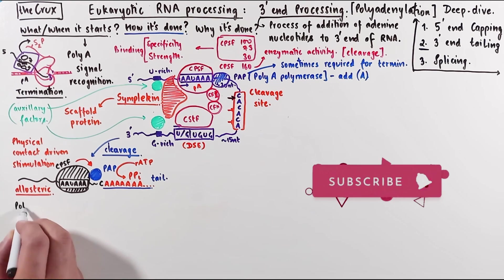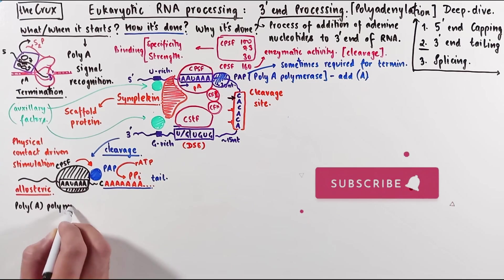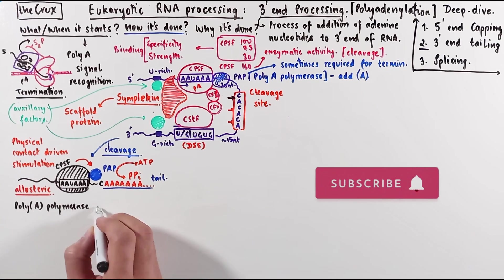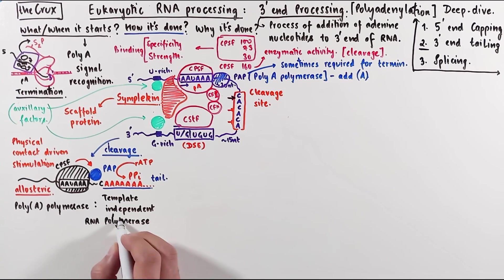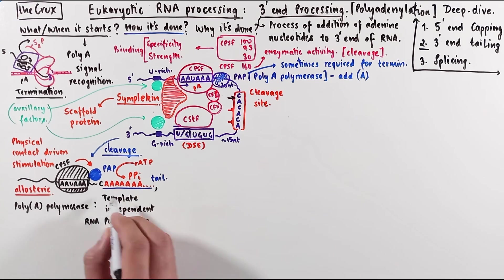Here's an interesting thing about PAP, if you haven't noticed already. This polyA polymerase is a template-independent RNA polymerase, which is very different from RNA polymerase II, for example, which requires a template DNA to make RNA. The PAP enzyme does not require a template. Okay, so how long can these tails get?